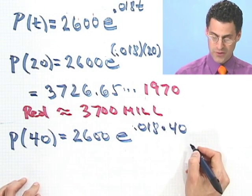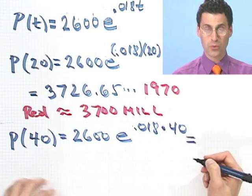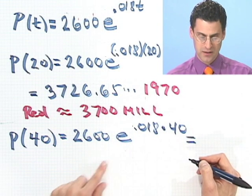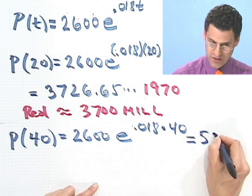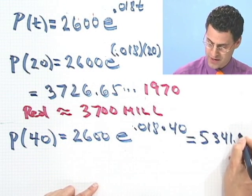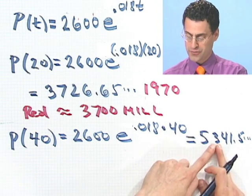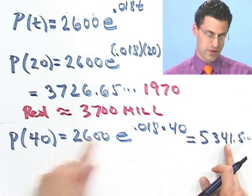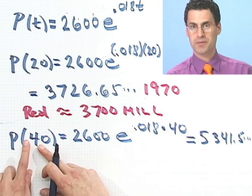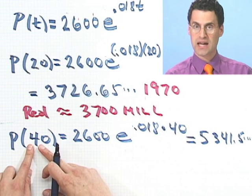And what would that be? Well, that equals, if you work that on a calculator using an e button, you would see 5,341.5 something. So in fact, 5,341,000,000 is what this model says should have been the population, world population, in 1990.